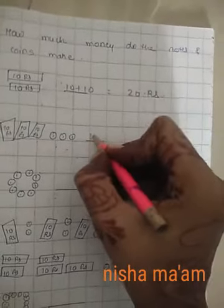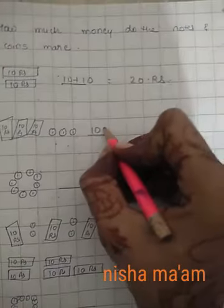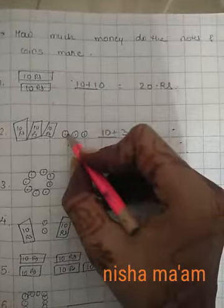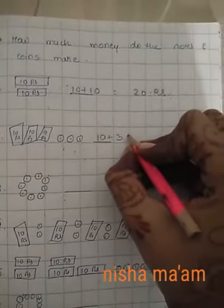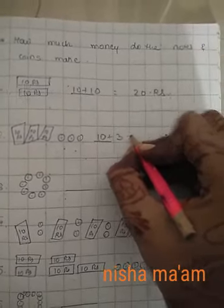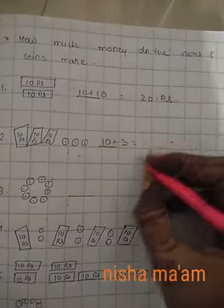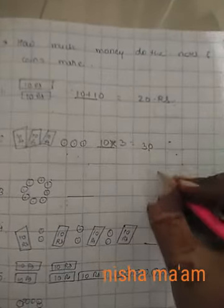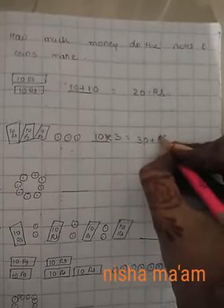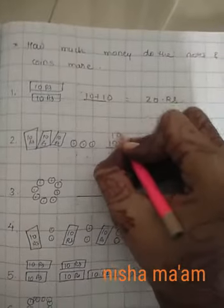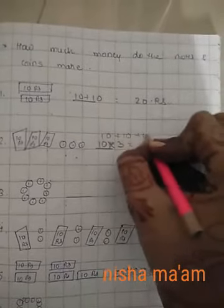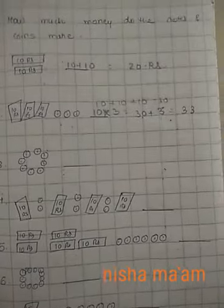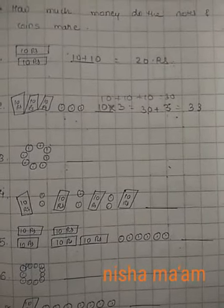How much money do the notes make? 10 plus 10. 1, 2, 3 notes, how much is it? 30. Plus 3 coins equal to 33 rupees. Or we can write it as 10 plus 10 plus 10 equal to 30, and then plus 3 equal to 33. Yes.